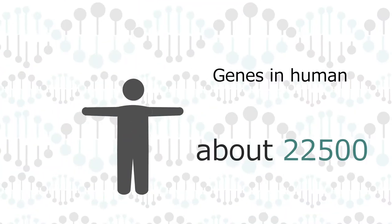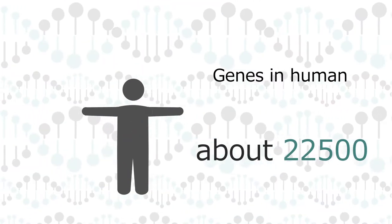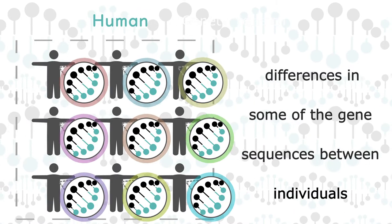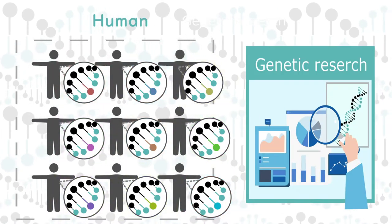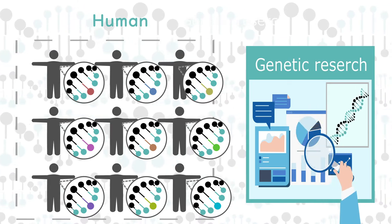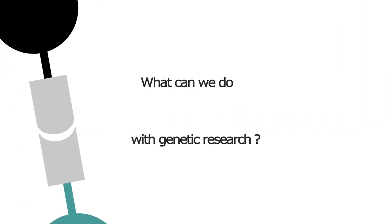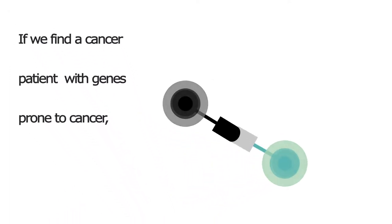There are about 22,500 genes in each human, and differences in some of the gene sequences between individuals lead to genetic research on disease. So what can we do with genetic research? If we find a cancer patient with genes prone to cancer...